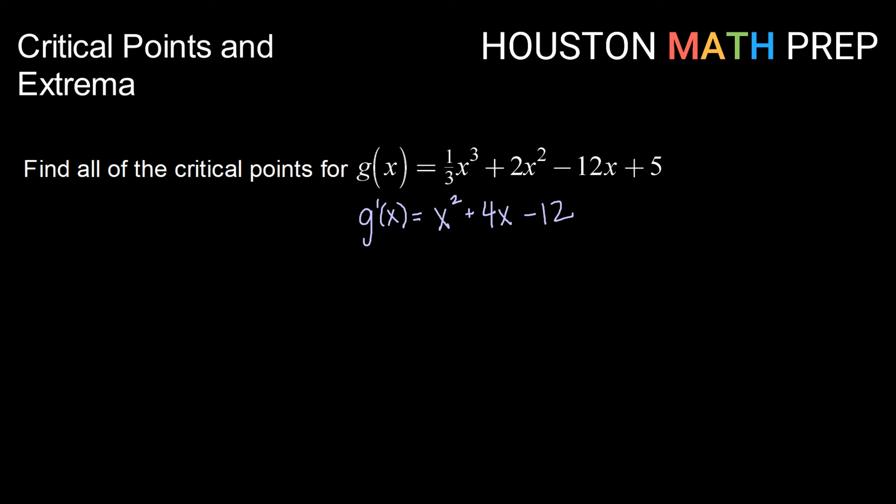x squared plus 4x minus 12. Now, we can get critical points one of two ways. We can look for values where our first derivative is zero,